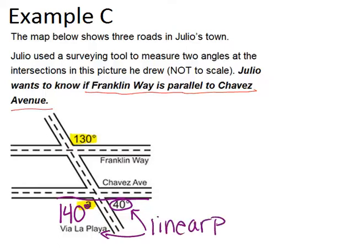Now that we know angle A is 140 degrees, we can see that angle A and the 130 degree angle are not congruent. That means that the two streets are not parallel. So the answer is no. And the reason why is because the alternate exterior angles are not congruent.